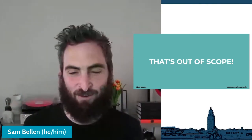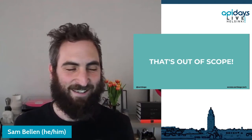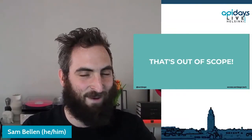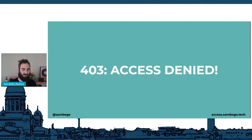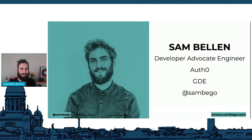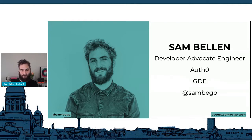Initially I wanted to do a 20-minute rant about scopes and permissions, but maybe I should call this talk 'Four Oh Three: Access Denied' because I'm going to start with some basics about access control, go over certain types of access controls, and then transition to permissions and scopes. My name is Sam Bellum, from Belgium, and I'm a developer advocate engineer at Auth0 — an identity-as-a-service provider that makes it easy to implement a secure authentication flow so you can focus on building your actual products, applications, and APIs.